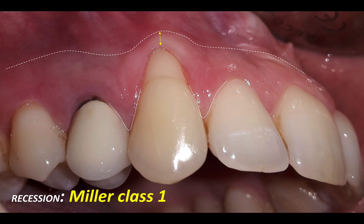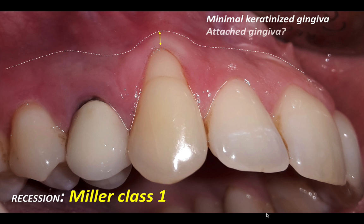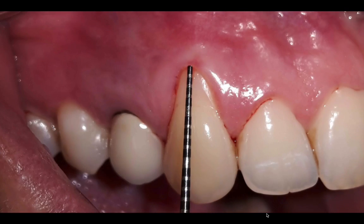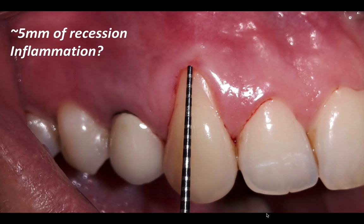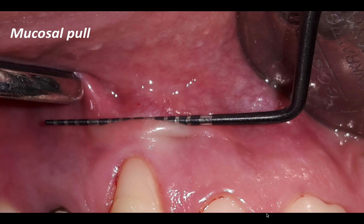What I can tell from the photo is the level of attachment, which will depend on the probing depth on the buccal surface of the tooth — very important to know. So: a Miller class 1 recession lesion extending coronal to the mucogingival junction, with good interproximal tissue, minimal keratinization, and an unknown level of attached gingiva. We're looking at about 5 or 6 millimeters of recession. It looks a little inflamed — I see some marginal inflammation. And there's definitely a mucosal pull, possibly a frenum pull, as marked with the probe. This picture shows exactly the border between the mucosa and the attachment, and the potential challenge later on in surgery to treat this type of recession.